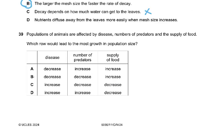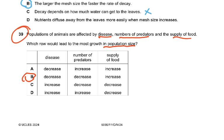Question number 39: Populations of animals are affected by disease, number of predators, and supply of food. Which row would lead to the most growth in population size? Naturally, disease should be less, predators should be fewer, and food supply should be more. So the answer is D: decrease in disease, decrease in number of predators, and increase in supply of food.